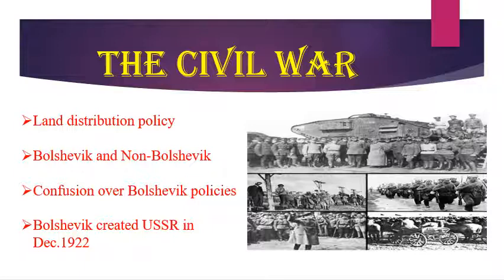Non-Bolsheviks took harsh steps against the peasants, which made them unpopular. However, the Bolsheviks took help from non-Russian peoples to take control of most of the former Russian Empire by 1920. Bolshevik troops were behaving very harshly with peasants and workers. Most non-Russian nationalists were given political autonomy in the USSR — Union of Soviet Socialist Republics — created by the Bolsheviks in 1922.